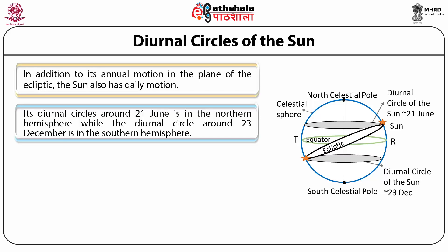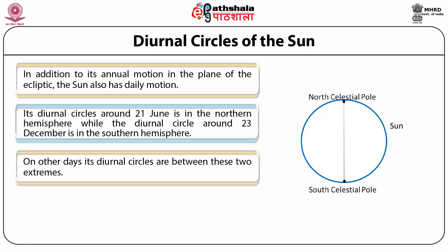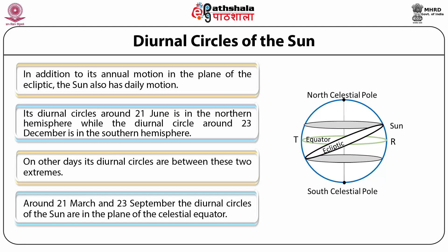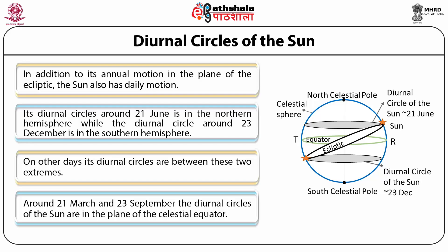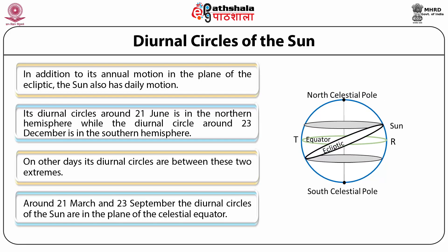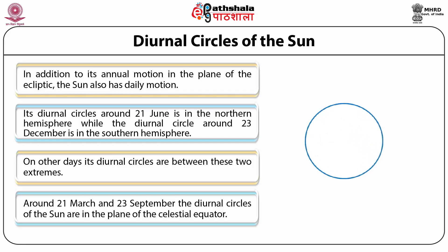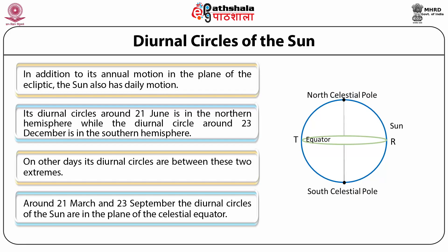The diurnal circle around 21st June is in the northern hemisphere while the diurnal circle around 23rd December is in the southern hemisphere. On other days, the diurnal circles are between these two extremes. Around 21st March and 23rd September, the diurnal circles of the sun are in the plane of the celestial equator. From 21st June to 23rd December, the diurnal circles migrate southwards, while from 23rd December to 21st June, the diurnal circles drift towards the north. For six months the diurnal circles are north of the equator, and for the remaining six months they are south of the equator.